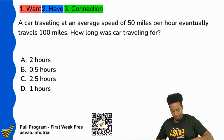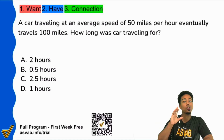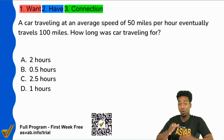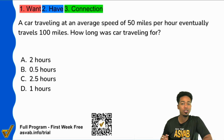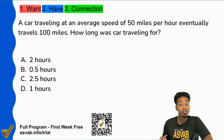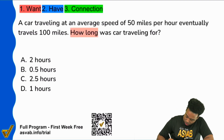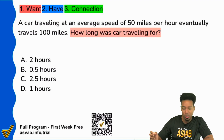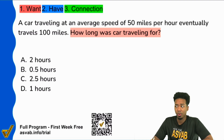First step: always understand what you're looking for. What do I want? That's always going to be in the question sentence — who, what, when, where, why, how many, which of the following. That is your question sentence. So right here, it says: how long was the car traveling for? So I'm looking for how long the car was traveling. And if I'm looking for the exact units, I can check the answer choices — all of them say hours.